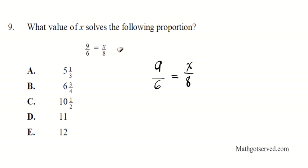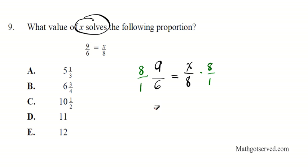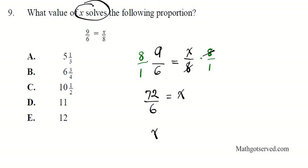If I can isolate x, I've essentially solved for x. x is being divided by 8, so we need to undo this division using the inverse operation — multiplication. So I'm going to multiply both sides by 8 over 1. That gives us 8 times 9, which is 72, over 6 on the left side. The 8s cancel on the right side, leaving x. 72 divided by 6 equals 12, so x equals 12.